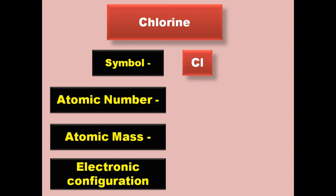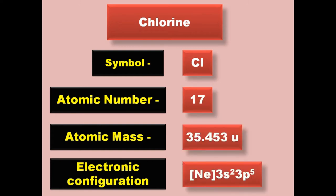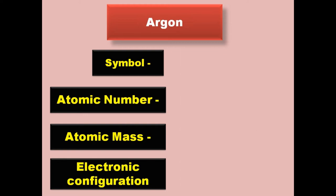Chlorine has symbol Cl, atomic number 17, atomic mass 35.453, electronic configuration [Ne] 3s2 3p5. Chlorine is a halogen and exists in gaseous form at room temperature.